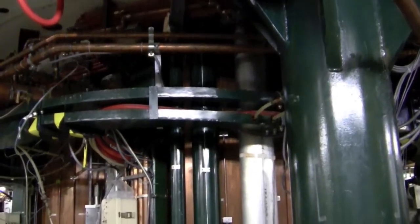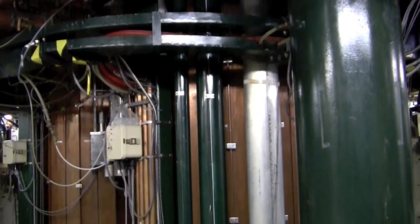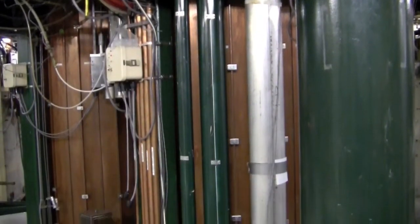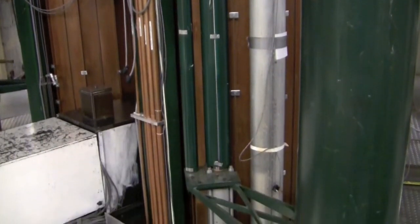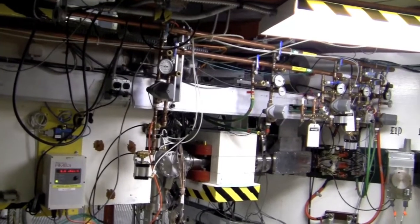The viewer plate has a phosphor coating that glows when it's hit by the beam. There's a camera mounted on the other side with a mirror that sends a signal to the control room so the operators can see the beam.